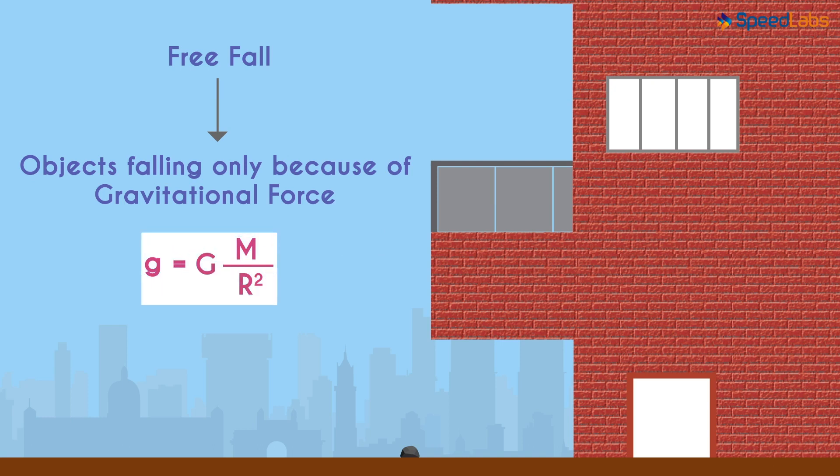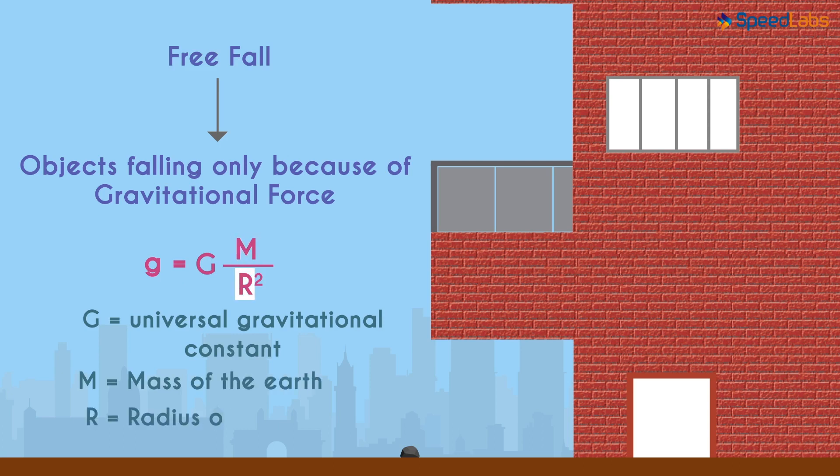Remember, this is only for free fall for objects very close to the earth. Uppercase G is the universal gravitational constant. M is the mass of the earth, and R is the radius of the earth.